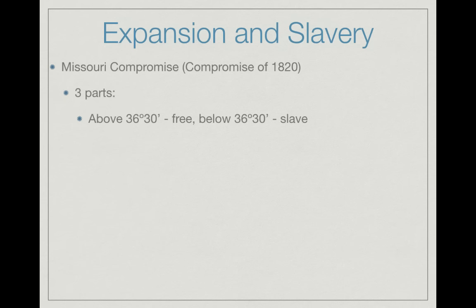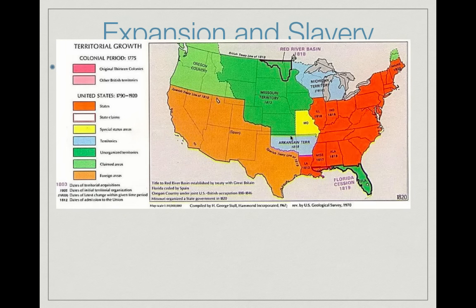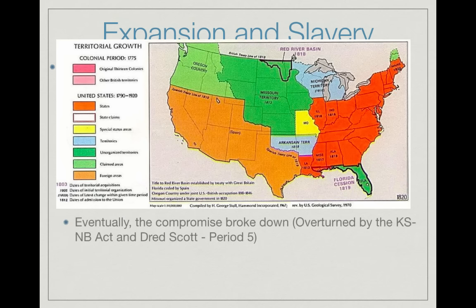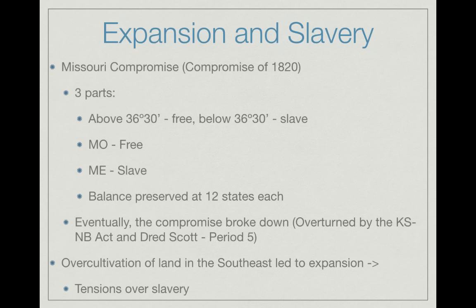The Missouri Compromise — also known as the Compromise of 1820 — has three parts: all land above 36°30' latitude would be free in the future; everything below would be slave; and Missouri was admitted as a slave state while Maine was added as a free state, keeping the balance at 12 states each. Neither the North nor South could gain an advantage in the Senate. This compromise would eventually break down and be overturned by the Kansas-Nebraska Act and Dred Scott. Over-cultivation of land in the Southeast due to cotton led to expansion and increased tensions over slavery heading into the Mexican-American War.